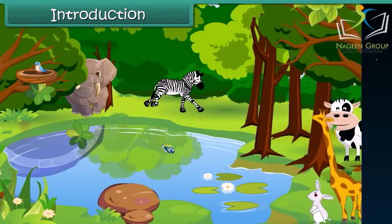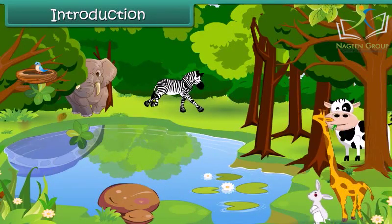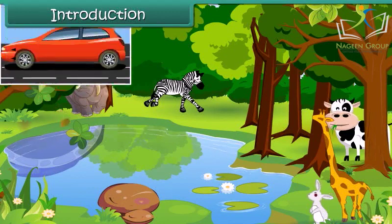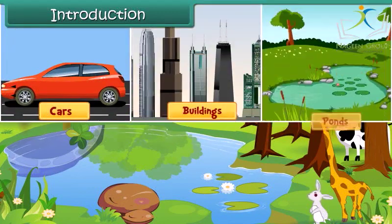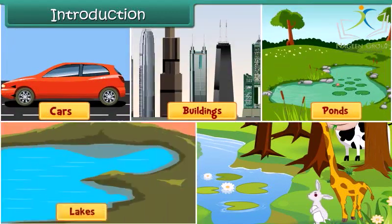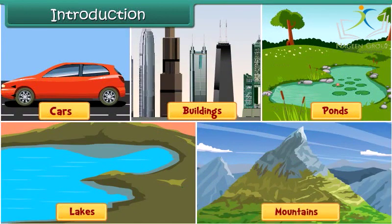We see living things such as trees, animals, as well as non-living things like cars, buildings, ponds, lakes and mountains around us. All these things are found on our planet Earth. In this module, you will learn about the Earth and what it consists of.